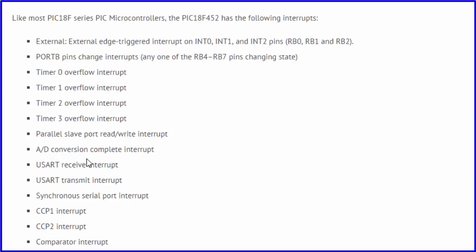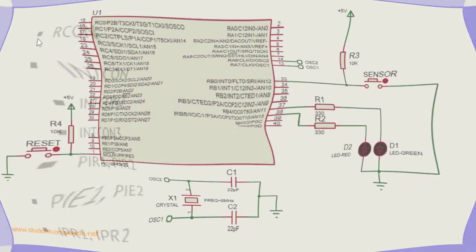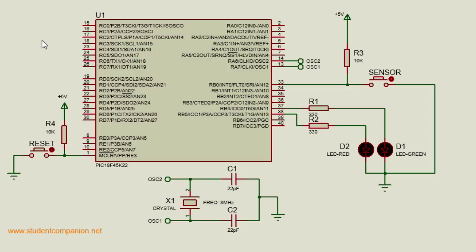Most PIC 18F series microcontrollers have the following interrupts: the external interrupt — which are external edge-triggered interrupts on pins RB0, RB1, and RB2, normally called INT0, INT1, and INT2; interrupts on port B pin changes, where any one of pins RB4 to RB7 changing status can raise an interrupt; Timer 0 overflow interrupt; Timer 1 overflow interrupt; Timer 2 and Timer 3 overflow interrupt; parallel slave port read-write interrupt; ADC conversion completed interrupt; USART receive interrupt; USART transmit interrupt; synchronous serial port interrupt; CCP1 interrupt; CCP2 interrupt; comparator interrupt; EEPROM flash write interrupt; bus collision interrupt; and low voltage detect interrupt.